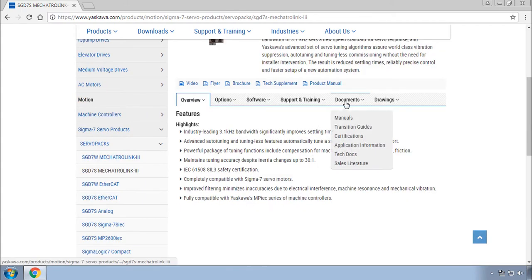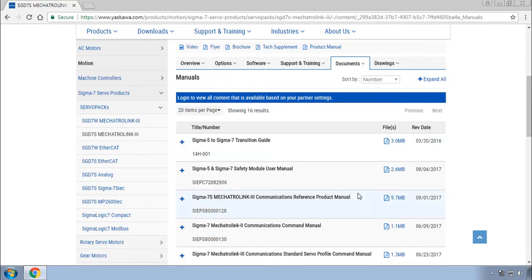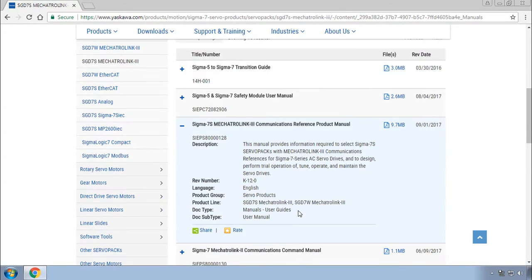Now, scrolling down to the Documents tab, choose the Product Manual. The exact document number is SIEP S8-0000128 and you'll see that in the cover page, let's download it.